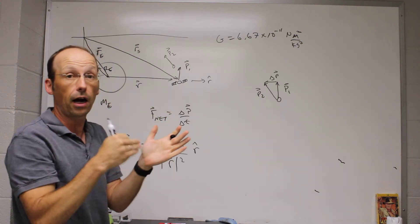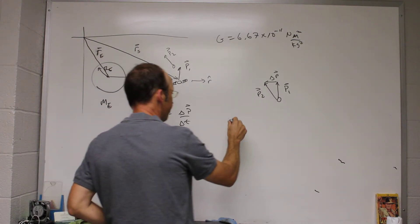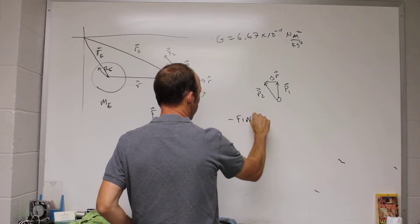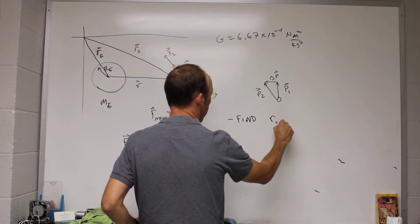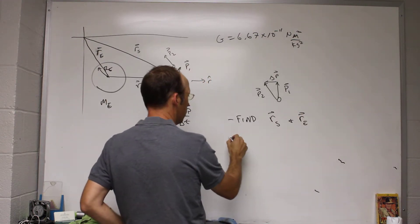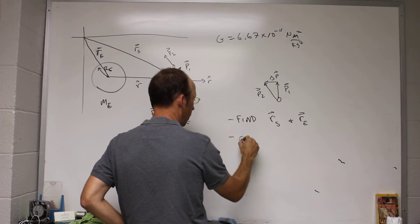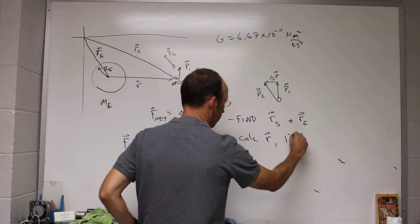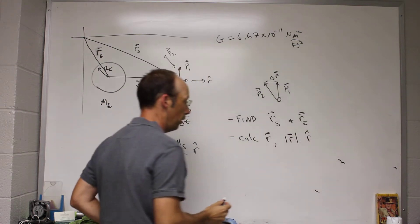But this is what I'm going to do to calculate the gravitational force. So here is our plan. Number one, find RS and R Earth. Hopefully that won't change. Two, calculate R, R magnitude, and R hat. I need all those.